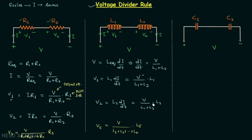The voltage divider rule is now clear for inductors as well. Now we will move on to the voltage divider rule when we have capacitors in series connection, with two capacitors in series.